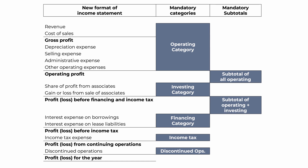As an example, the new format of the income statement will look like this. You will notice that it is sequentially grouped into operating, investing, financing, income tax, and discontinued operations. We are also showing the mandatory subtotals of Operating Profit and Profit or Loss before Financing and Income Tax.